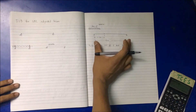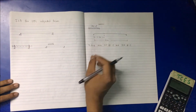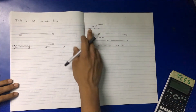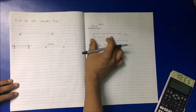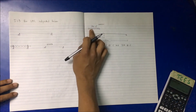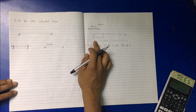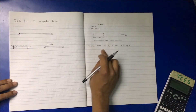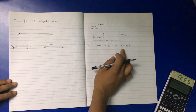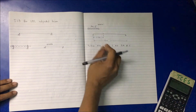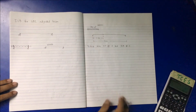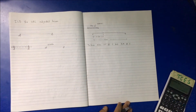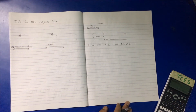We are provided with a beam of span 15 meters subjected to a UDL shorter than the span — only 5 meters long. The problem asks us to find the maximum shear force and bending moment at point C, which is 6 meters away from the left support.